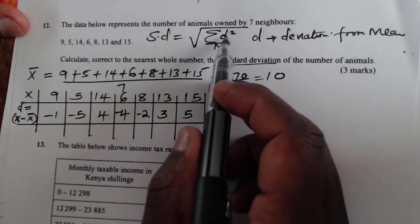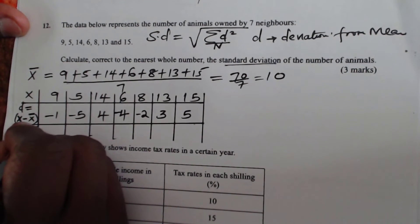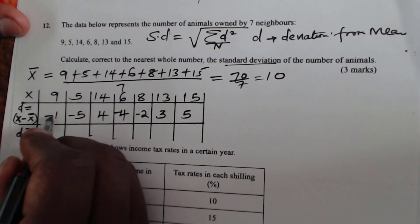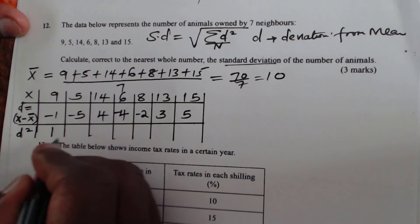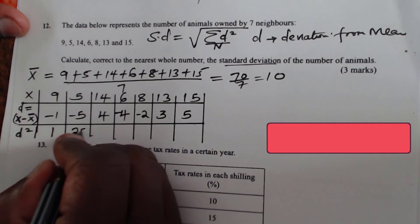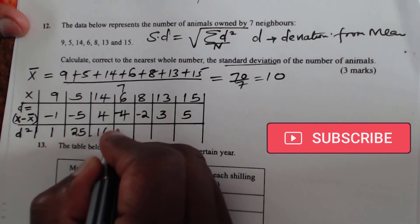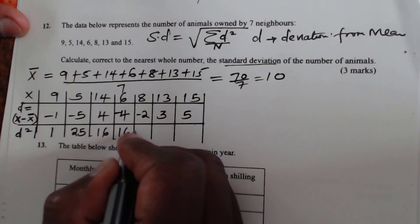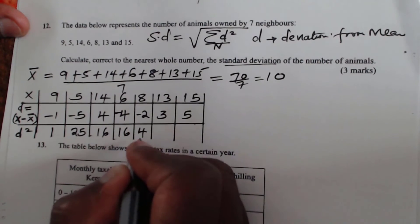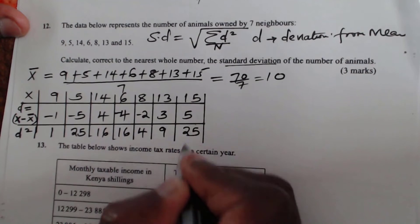Then we need to get D squared. We need to get the deviation squared. Negative 1 squared is 1, negative 5 squared is 25, 4 squared is 16, negative 4 squared is 16, negative 2 squared is 4, 3 squared is 9, and 5 squared is 25.